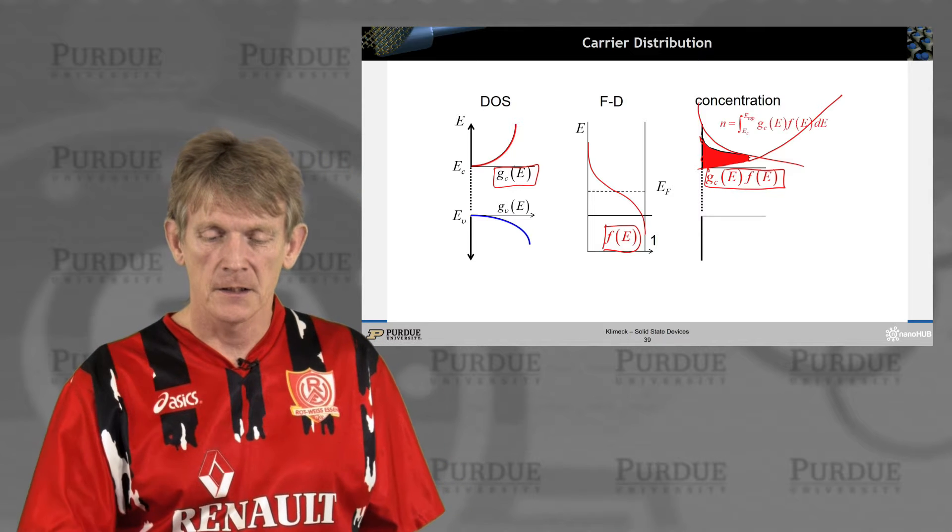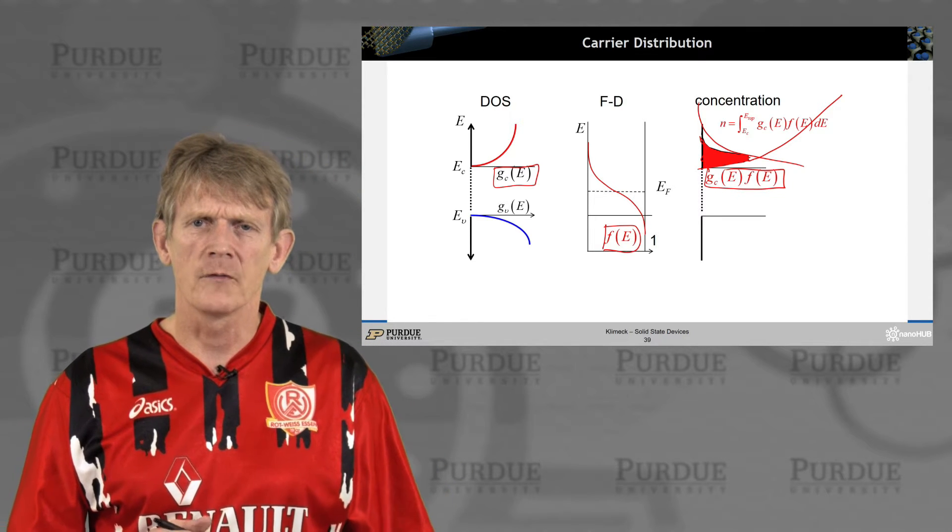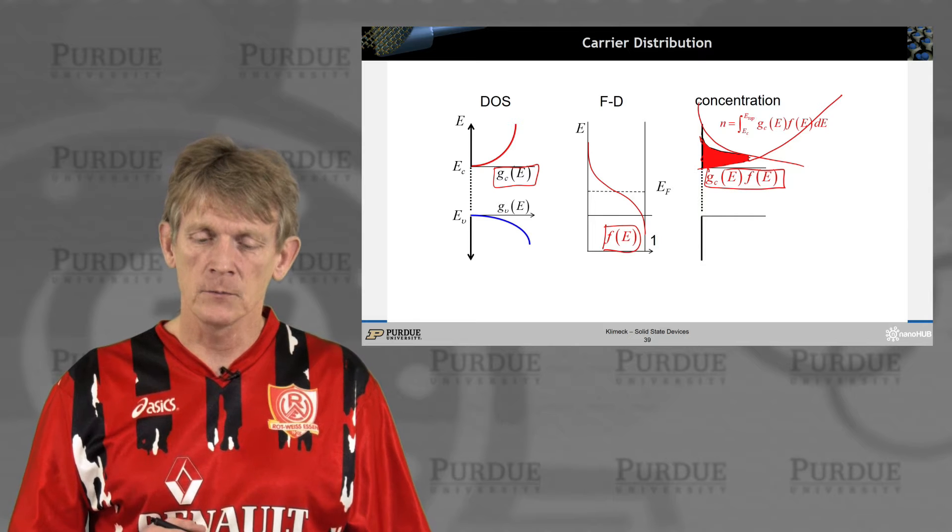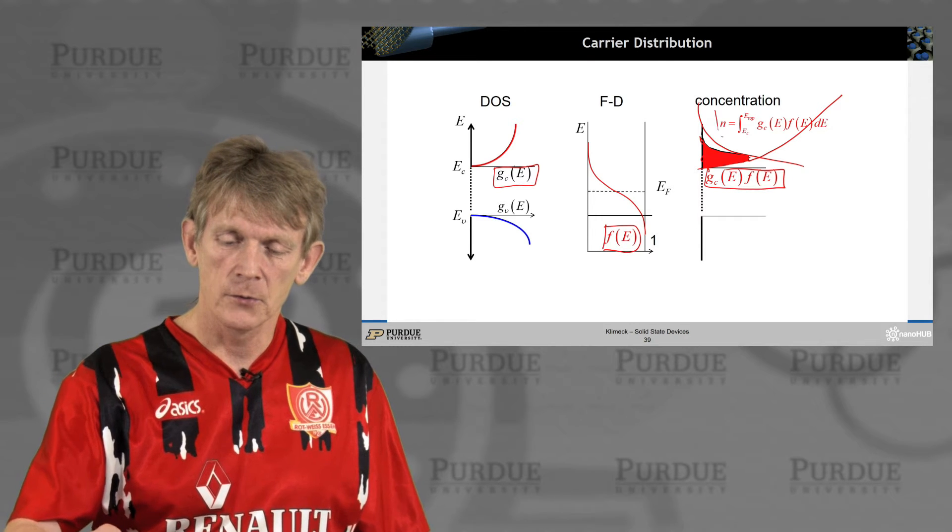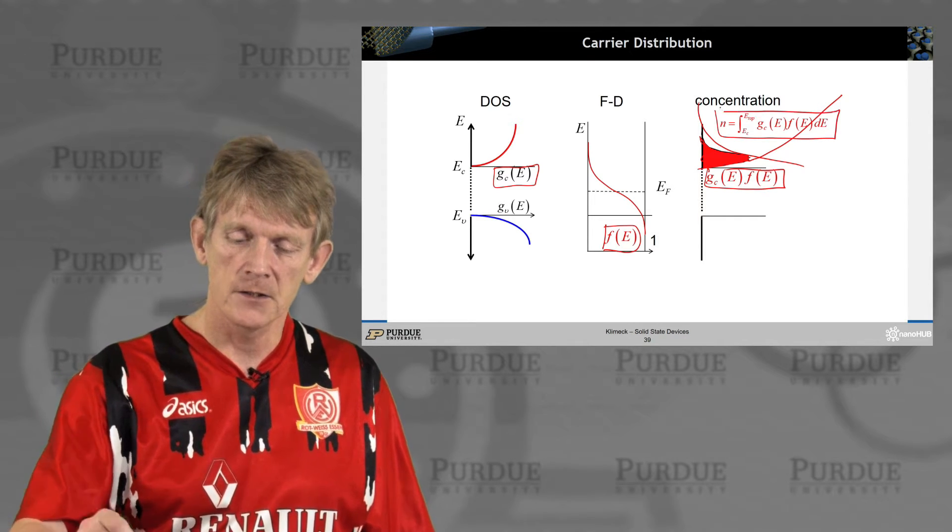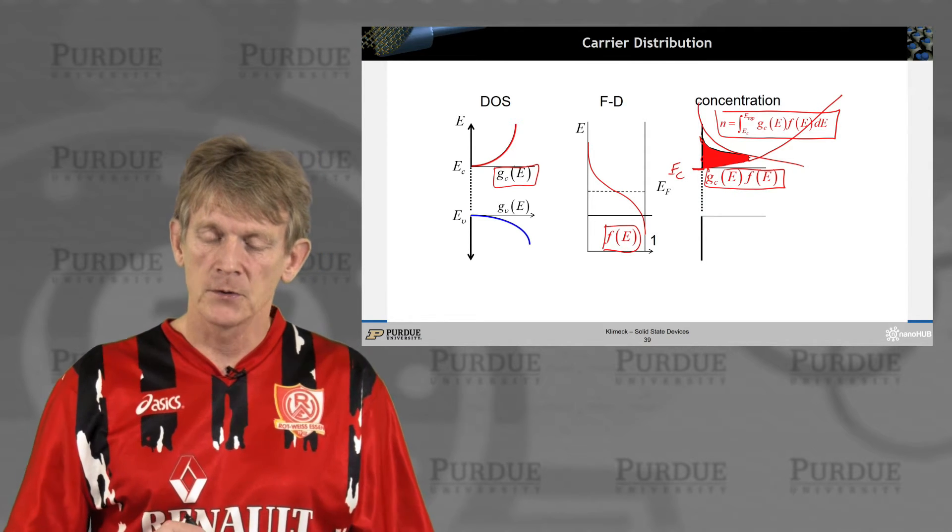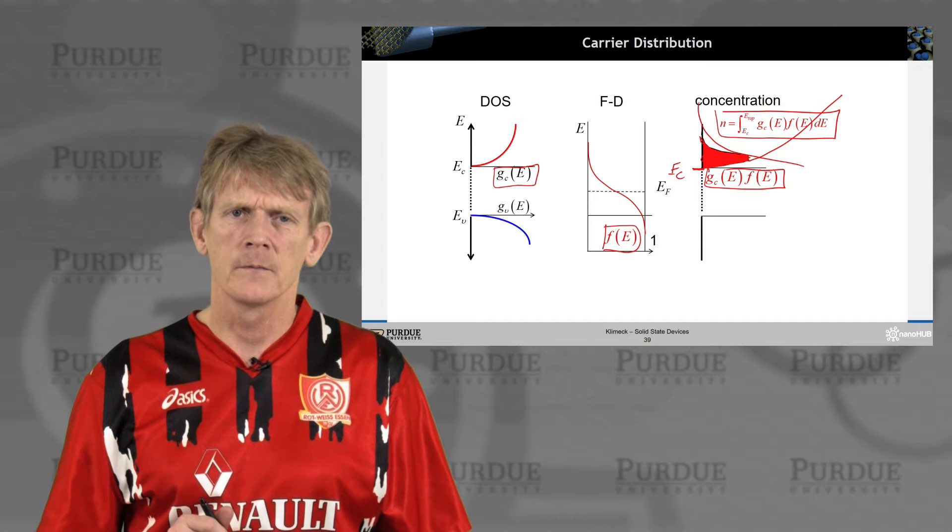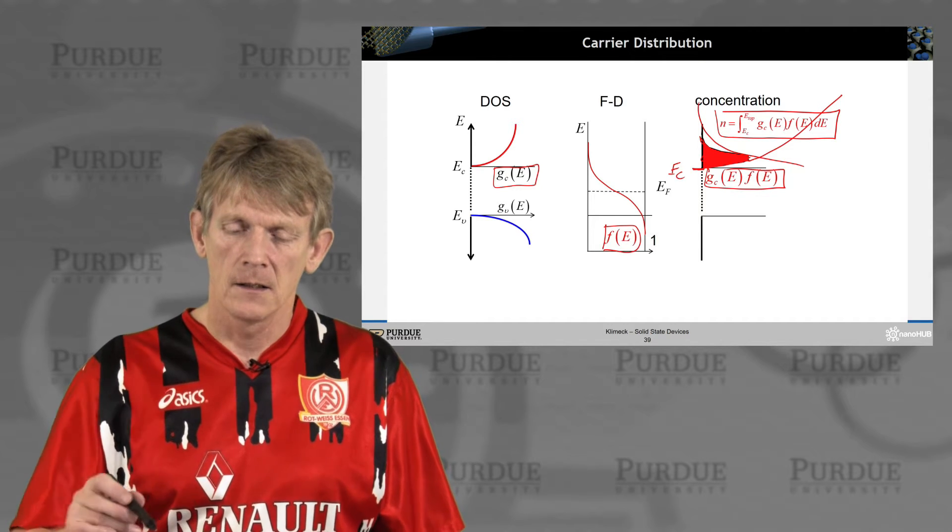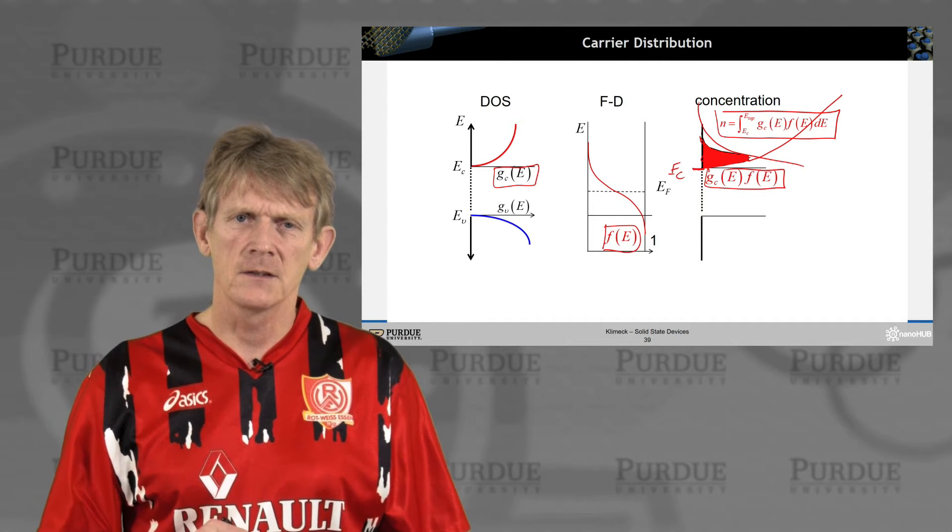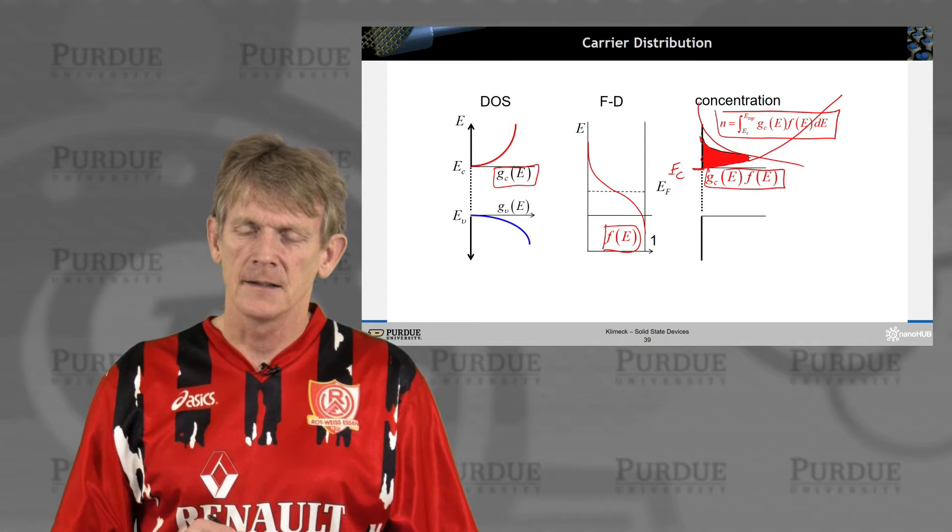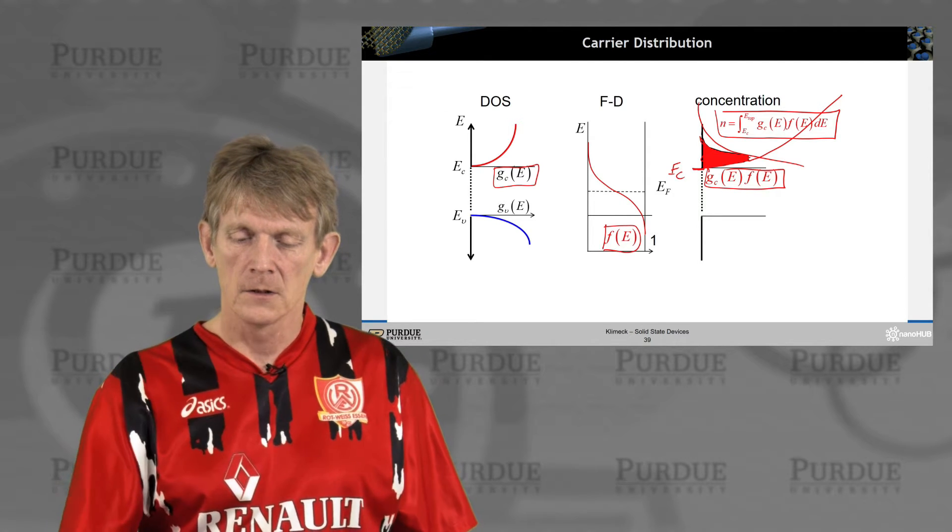If you wanted to know the number of electrons in total in the system, you would integrate this distribution from the conduction band edge, where states occur, so here is Ec, up to some top of the density of states. We know that the density of states is in a finite band, and you would stop your integral there.